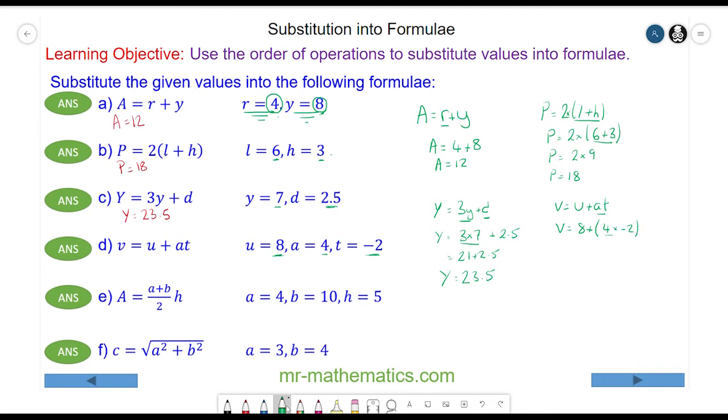We'll do the multiplication before the addition, so v will equal 8 plus negative 8, which is 4 times negative 2.